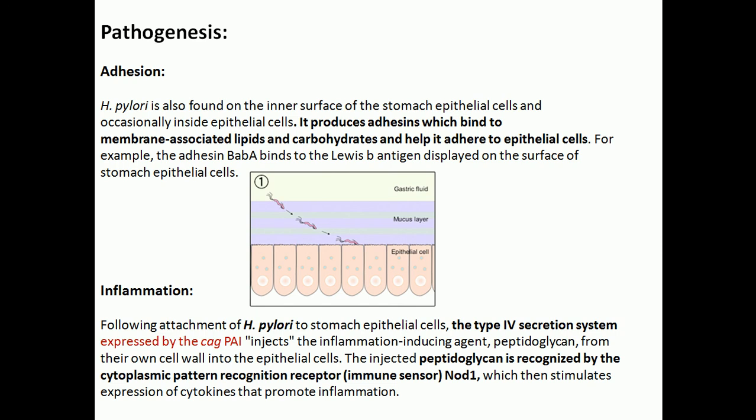Discussing adhesion in more detail: Helicobacter pylori interacts with carbohydrates and lipids on the surface of the host cell membrane using certain adhesion molecules. One such adhesion molecule is BabA, which interacts with the Lewis B antigen displayed on the surface of stomach epithelial cells — a typical example of Helicobacter pylori adhesion to the epithelial cell.